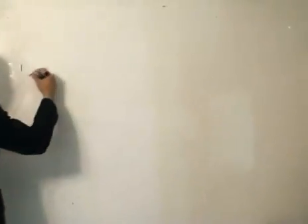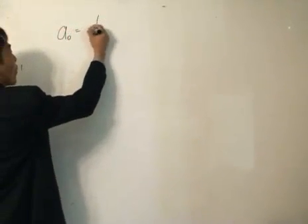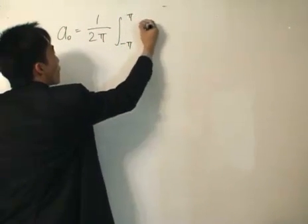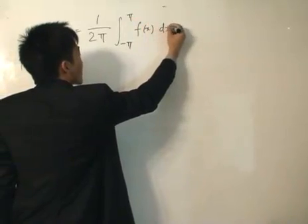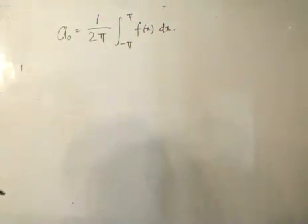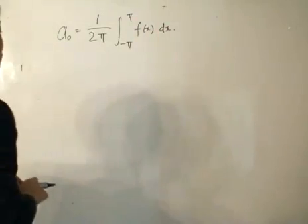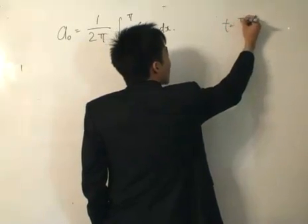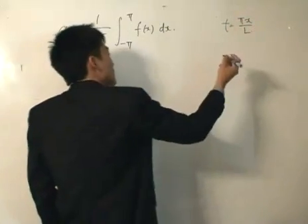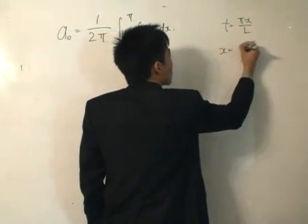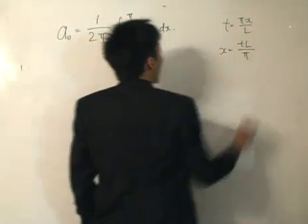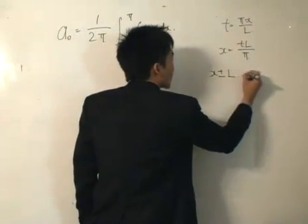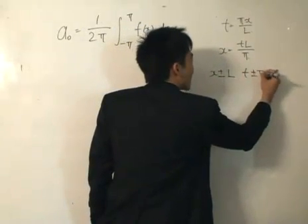So let's deal with one of the Fourier coefficients: a₀ equals 1 divided by 2π, integrating from minus pi to pi of f dx. What we're going to do is define a new variable t equals pi x divided by l. We can rewrite that as x equals t times l divided by pi. So x is defined from minus l to l, and t is defined from minus pi to pi.